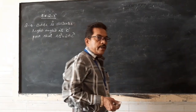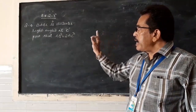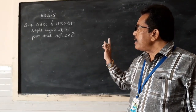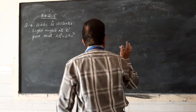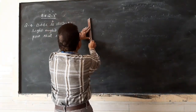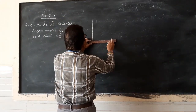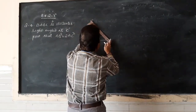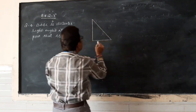Now the fourth one. In triangle ABD, triangle ABD is an isosceles triangle with right angle at C. Prove that AB² = 2AC². It is right angle at C, so let us draw the right angle at C.